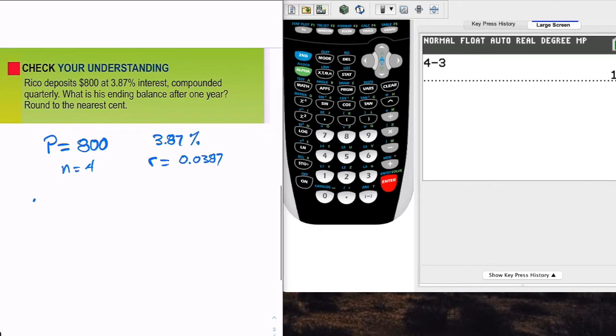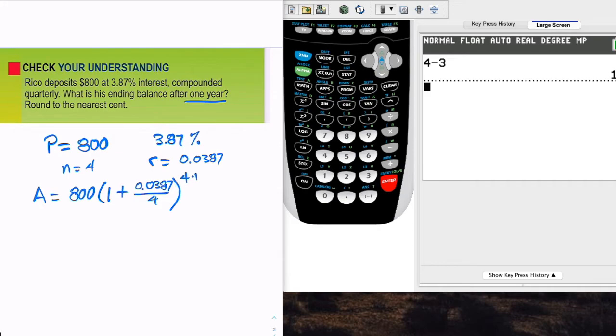So now we just plug this in. The amount that we're earning then is $800, and that times 1 plus 0.0387 divided by 4, and that raised to the 4th power. And we're talking about one year, so we're times 1. Now we get to do this rounding to the nearest cent. So let's go ahead and plug this into a calculator.